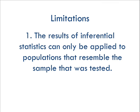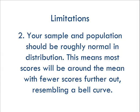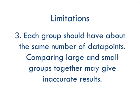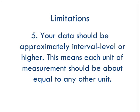Like most stats, there are some limitations that go with t-tests. First, you can only generalize to a population that resembles your sample — if our cholesterol experiment was only tested on adults, we can't say the results also apply to children. Second, your sample and population should be roughly normal in distribution, resembling a bell curve around the mean; if the distribution is skewed, your p-values may be inaccurate. Third, you should have close to the same number of scores in each group, as comparing a large group to a small group can lead to inaccurate results. Fourth, your data points should be independent of each other. Fifth, your data should be at least interval level — one unit of your score should be equal to any other unit; if you're using ranks like first, second, third, your results may be inaccurate.